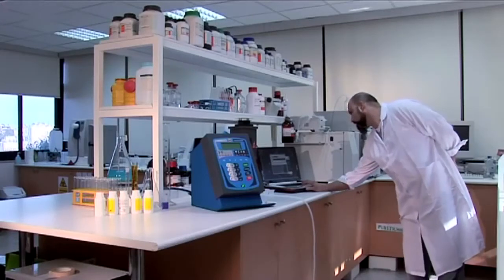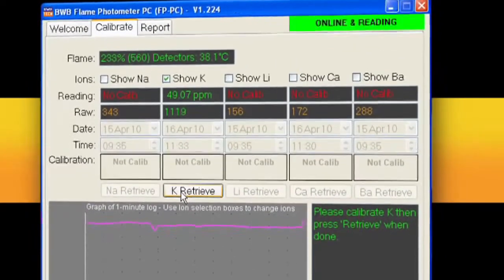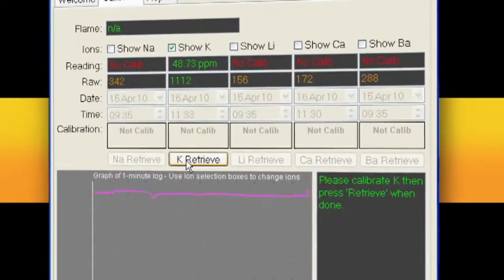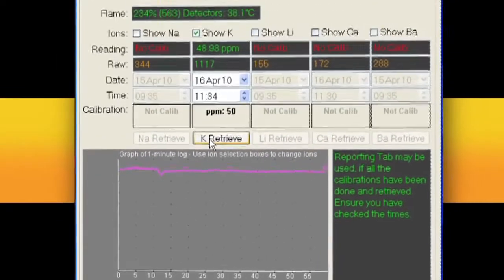We can follow along with the FP PC as the calibration progresses. When the calibration is finished, tick on the retrieve calibration box and the FP PC will now be ready to report potassium readings.